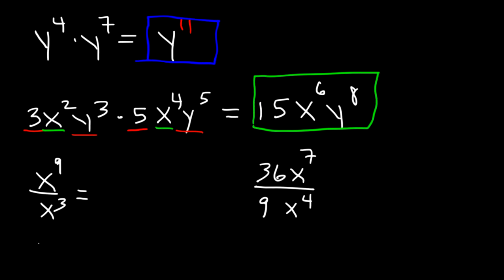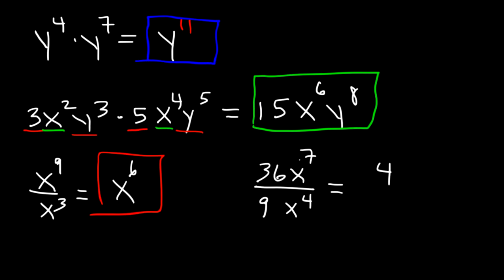Now for the next example: x to the ninth divided by x to the third. You need to subtract — 9 minus 3 is 6 — so you get x to the sixth power. For the last example, 36x to the 7 divided by 9x to the fourth: 36 divided by 9 is 4, and x to the 7 divided by x to the fourth means we subtract exponents — 7 minus 4 is 3 — so we get 4x cubed.